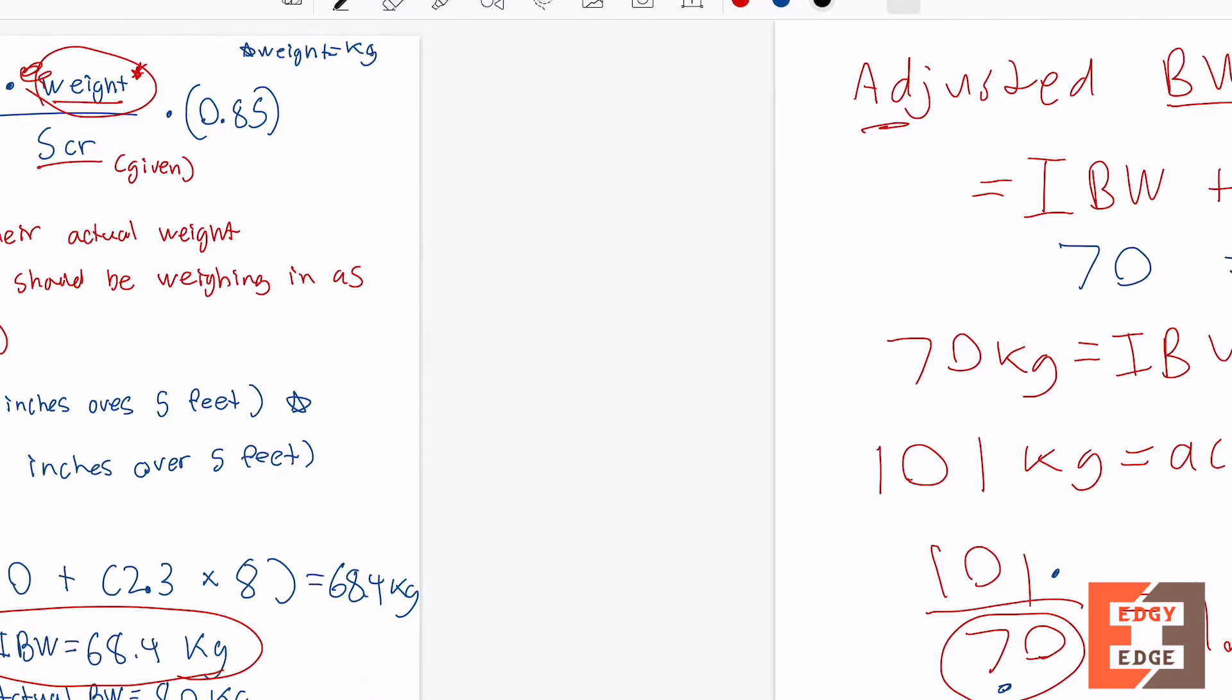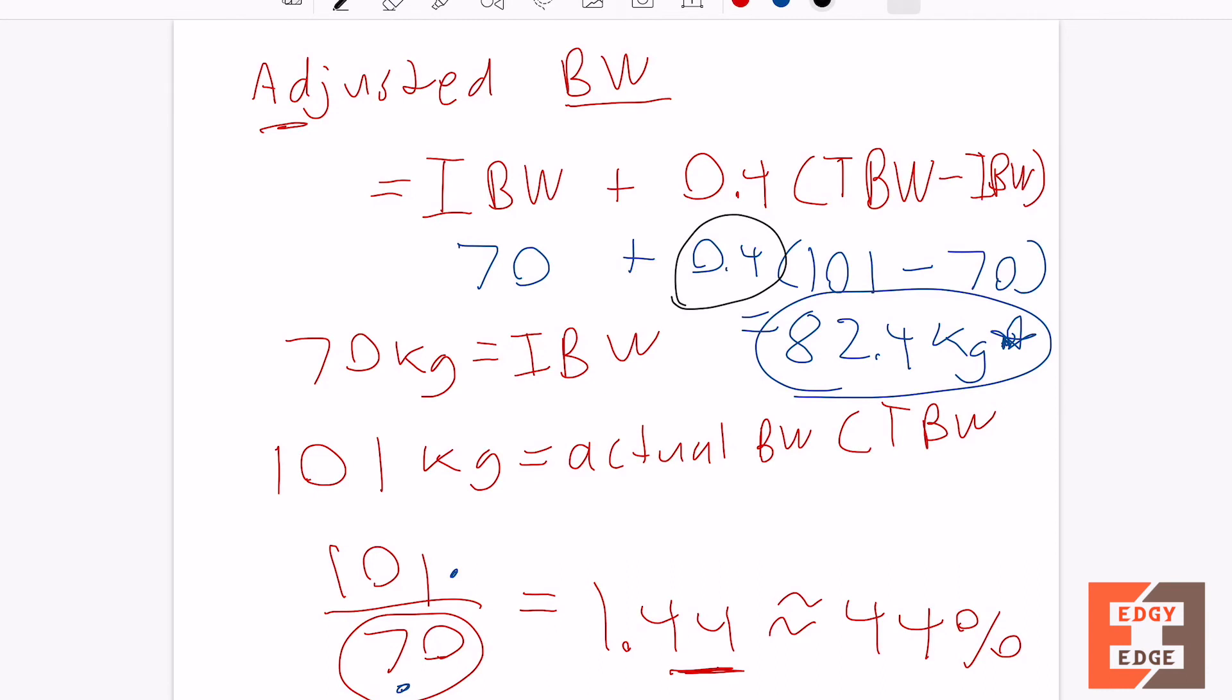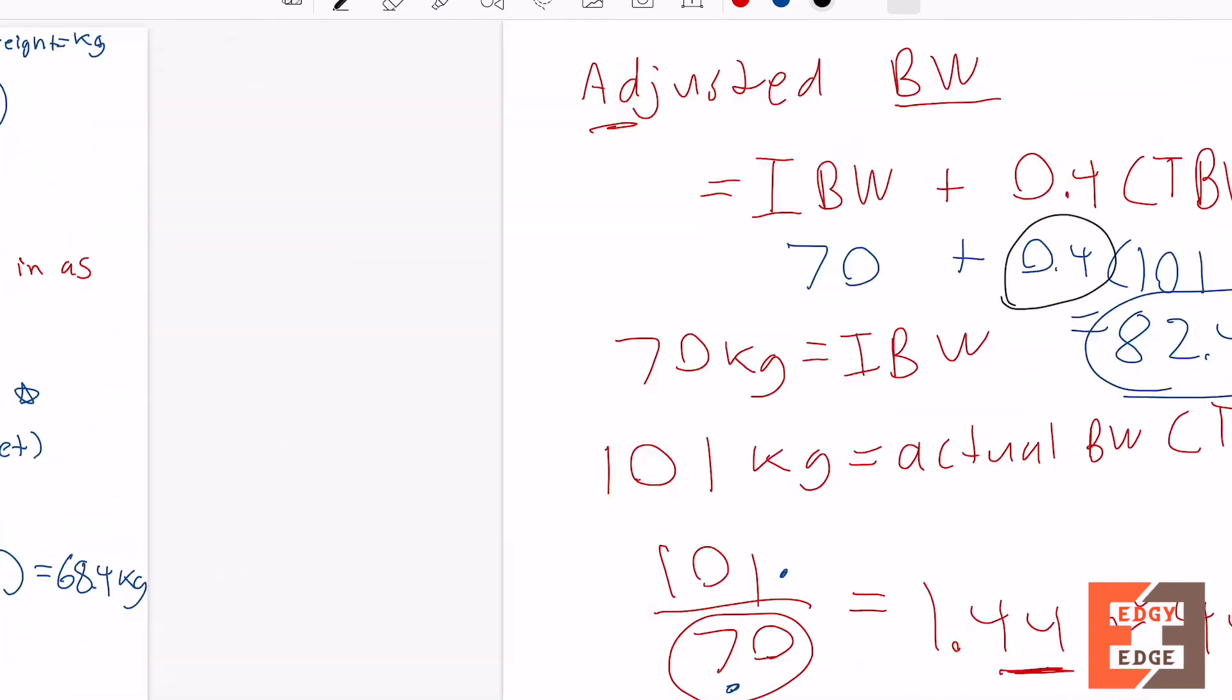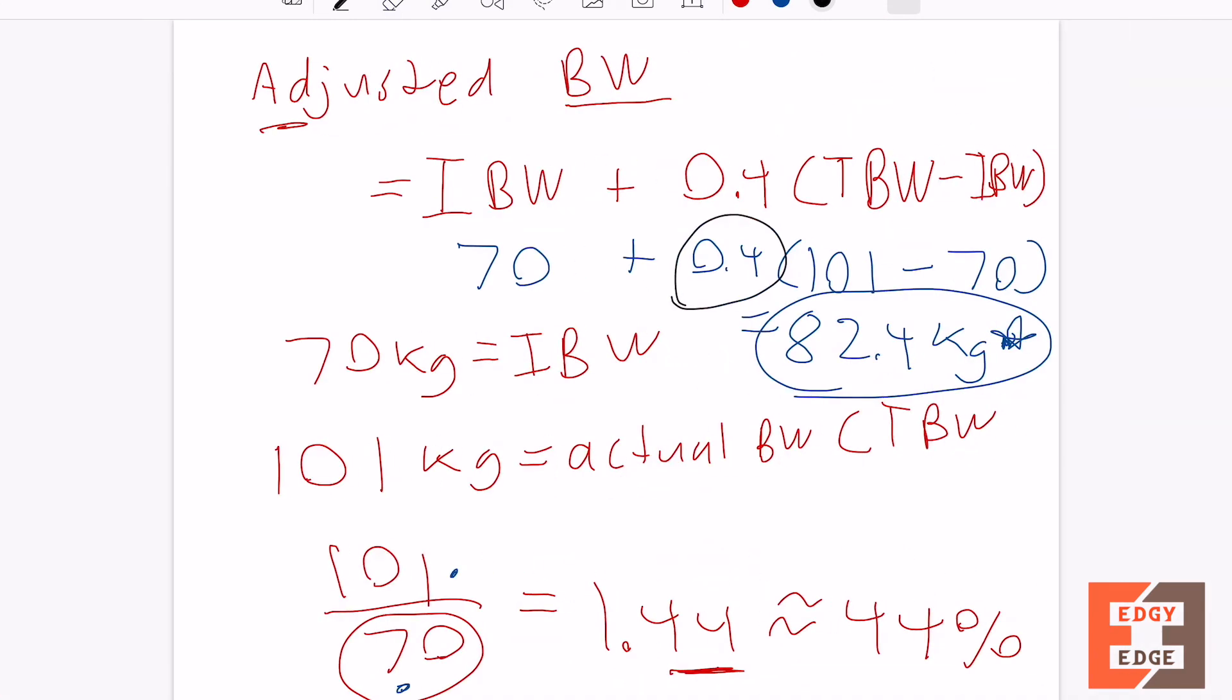That's basically it. I hope you guys learned something in this video. The main takeaways are it's an adjusted body weight, it's like a meet me in the middle between ideal and actual body weight, and it's just a way of getting a more accurate measure of creatinine clearance when adjusting for weight. Thanks for watching guys, make sure you subscribe, give this video a big thumbs up, and I'll see you guys next time.